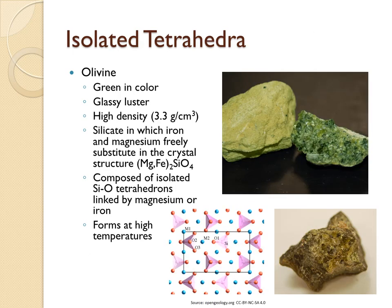Let's now examine several common silicate minerals, starting first with the isolated tetrahedron. The most common isolated tetrahedron mineral is olivine. Olivine is primarily composed of single SiO4 tetrahedrons linked by magnesium or iron. It's a high temperature mineral, relatively dense at about 3.3 grams per cubic centimeter. It is a primary constituent of Earth's mantle and the ocean crust, and is typically an olive green color with a glassy luster.